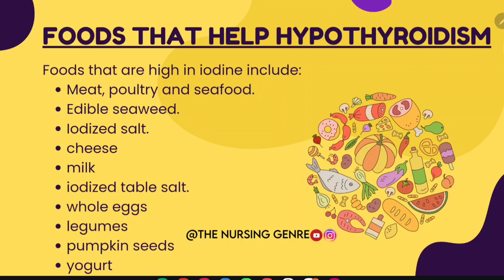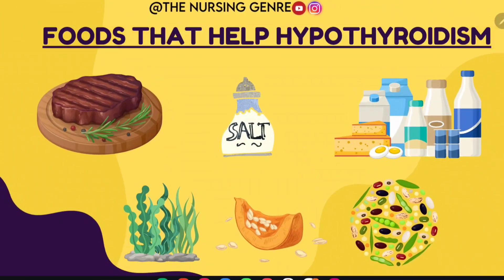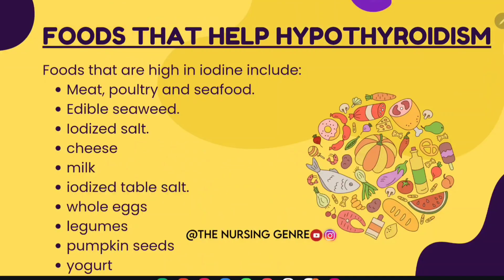Foods recommended for hypothyroidism include iodized salt, edible seaweed, cheese, milk, and all dairy foods.